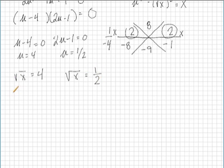Well, we can square both sides of this equation. Square root of x squared is just x. 4 squared is 16. Again, over here, square root of x squared, we'll go ahead and notate that on this one, is x. And 1 half squared is 1 fourth.